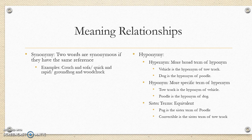Hyponymy involves hypernyms, which is a broad term of a hyponym. So 'vehicle' is a hypernym of 'tow truck,' and 'dog' is a hypernym of 'poodle.' A hyponym is a more specific term of a hypernym, so 'tow truck' is a hyponym of 'vehicle' and 'poodle' is a hyponym of 'dog.' Sister terms are equivalent at the same level — pug is a sister term of poodle, and convertible is a sister term of tow truck.